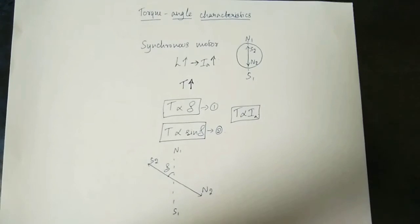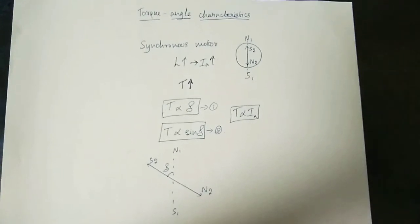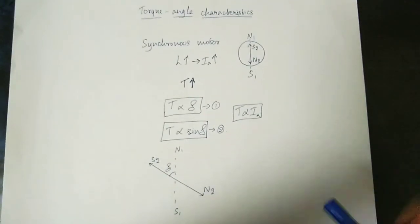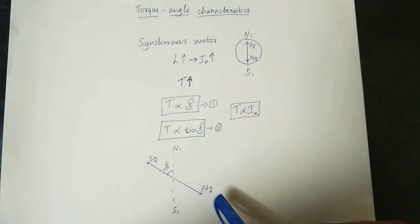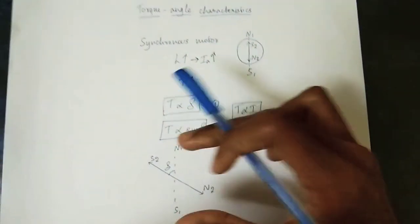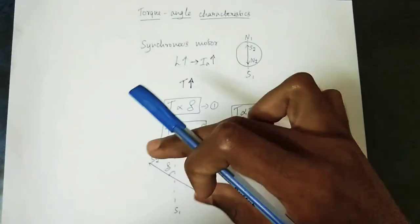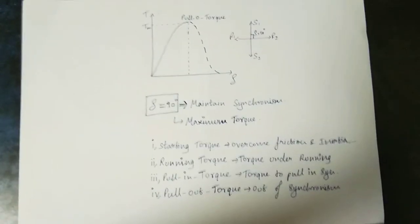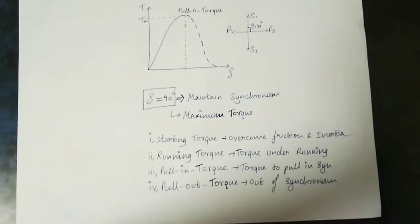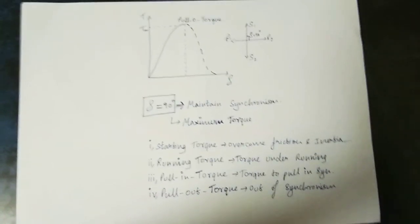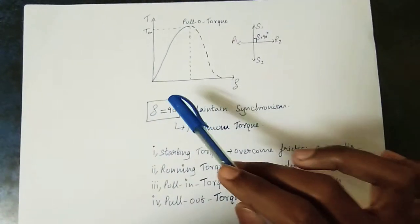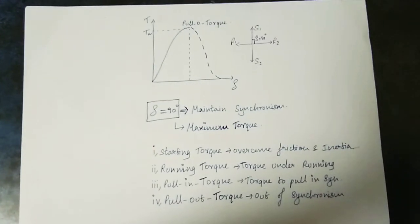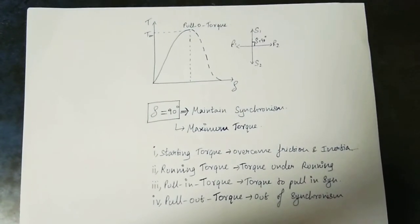The load angle is represented by the symbol delta (δ). That is the equation. The stator and rotor axes form this angle as shown in the diagram. If you look at the graph, the target torque corresponds to the load angle δ. If you increase the load angle, the torque increases along the axis.